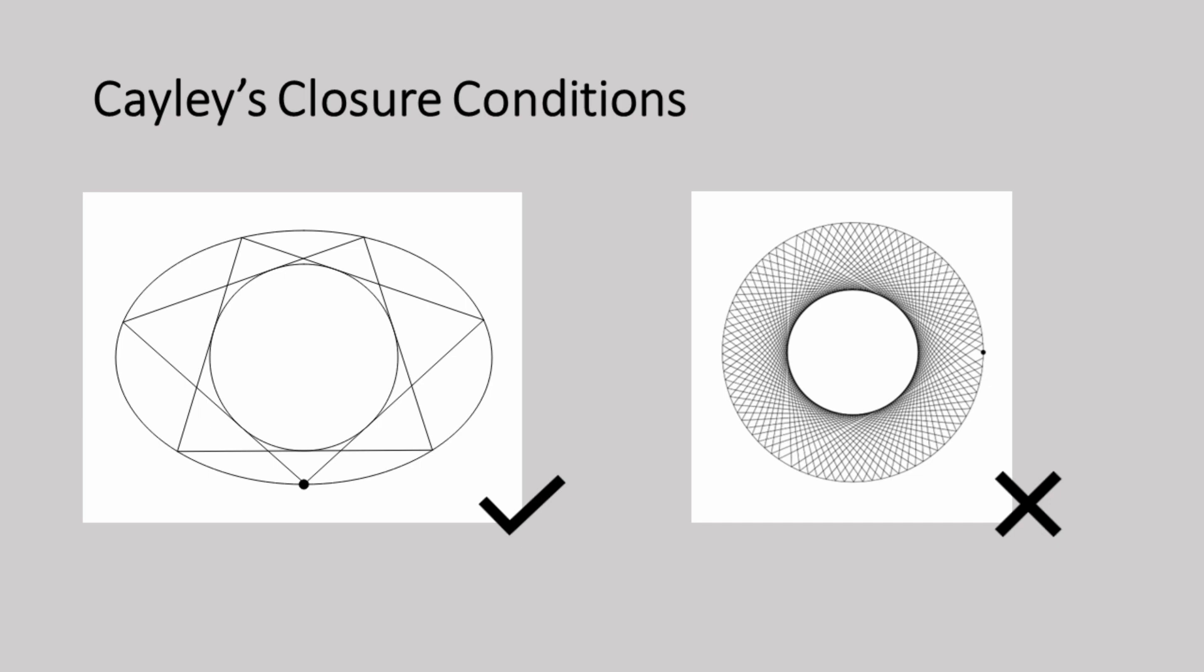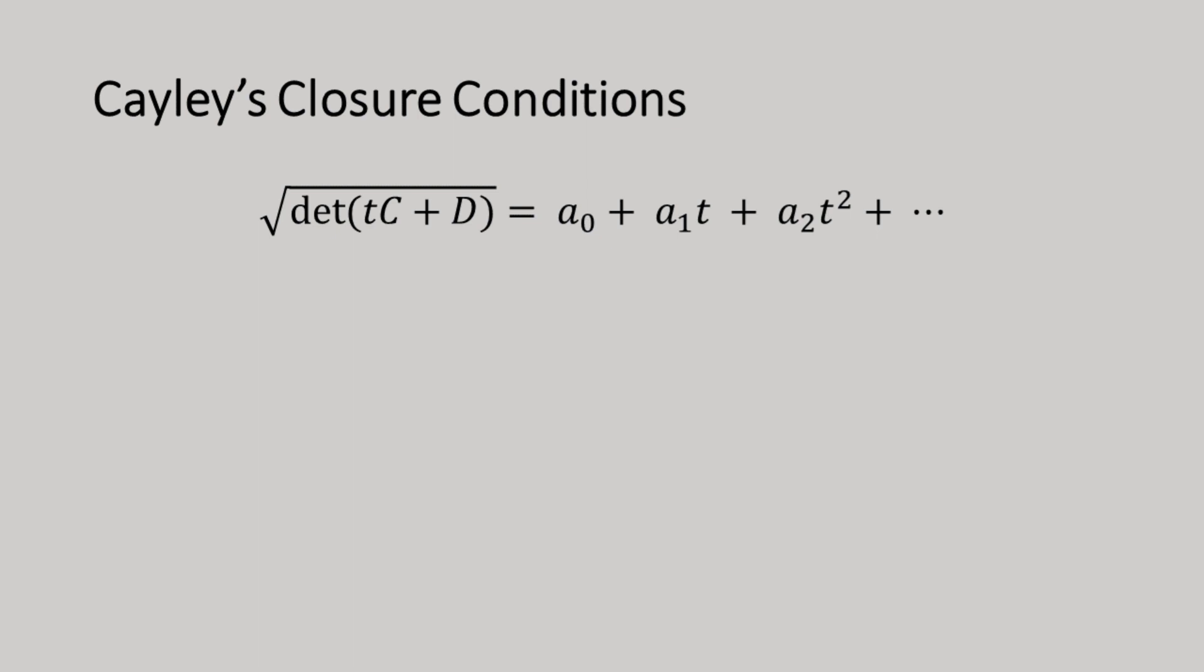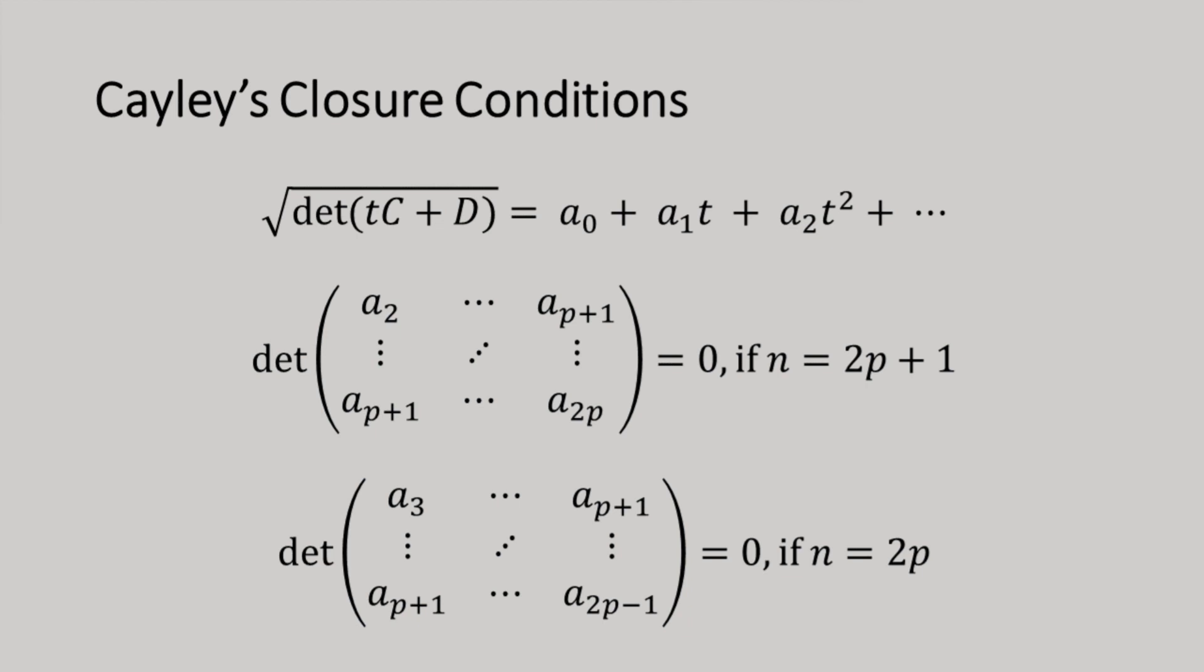It states, given two three by three matrices which define the quadratic forms of two conics on a plane, and given the following equation where the right hand side is the Taylor series of a branch of the square root of the cubic of the determinant of t times the first matrix plus the second matrix.